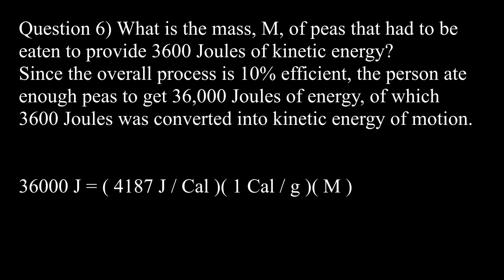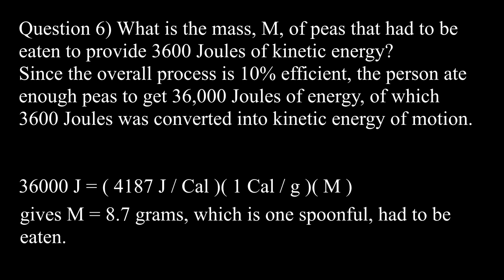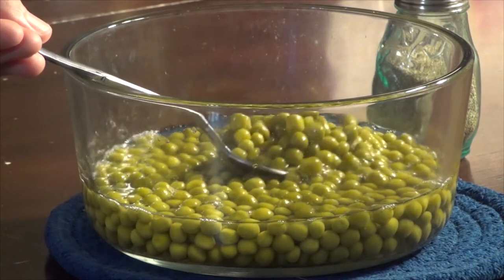Question 6: what is the mass M of peas that had to be eaten to provide 3600 joules of kinetic energy? Since the overall process is 10% efficient, the person ate enough peas to get 36,000 joules of energy, of which 3600 joules was converted into kinetic energy of motion. Solving: 36,000 joules equals 4187 joules per calorie times 1 calorie per gram times mass M. We find that 8.7 grams of peas — which is one spoonful — had to be eaten.